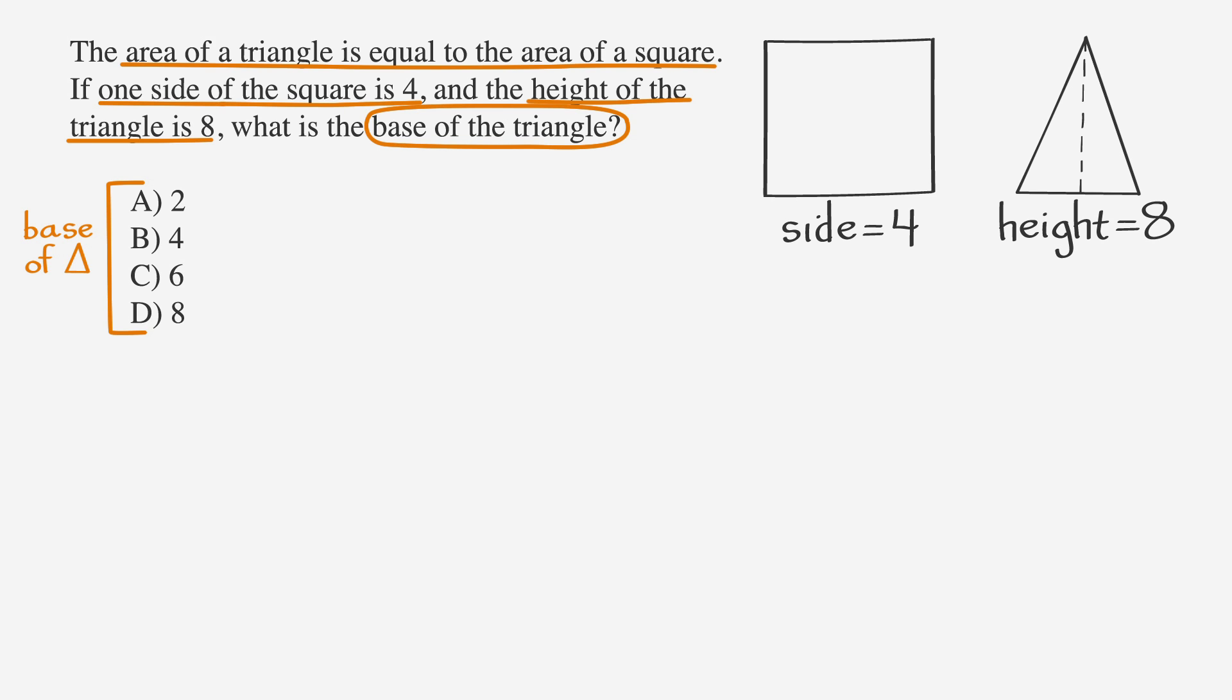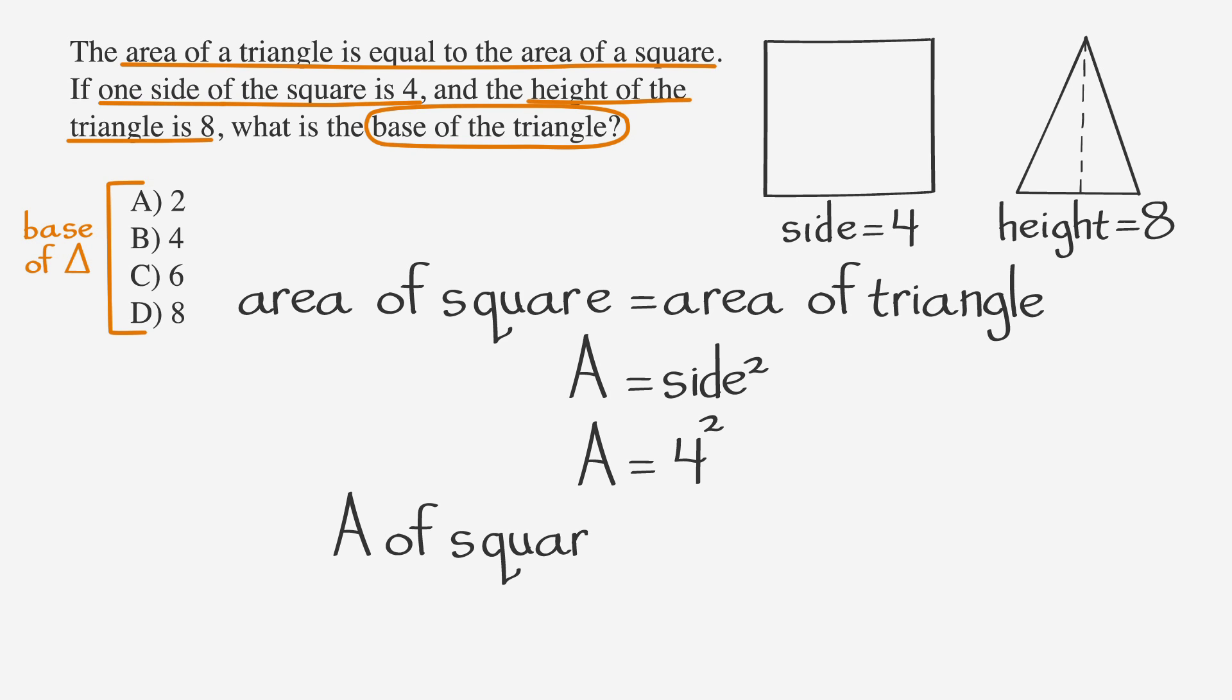We're also told that the area of our square is equal to the area of our triangle. Recalling that the formula for the area of a square is side squared, we can plug in the numbers for our square. So, 4 squared, or 16, is the area of our square. The question states that the areas of these figures are equal. This means that the area of our triangle is also 16.